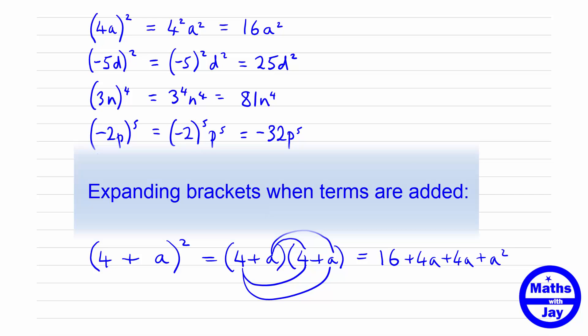Comparing it with the first line of this page where we had (4a)² giving us 16a², we have here got a 16 and an a², but they're not attached to each other. They're not multiplying each other. We also have 4a and 4a, so this turns out to be 16 + 8a + a².